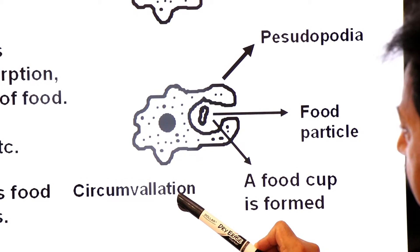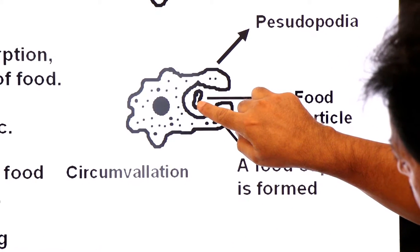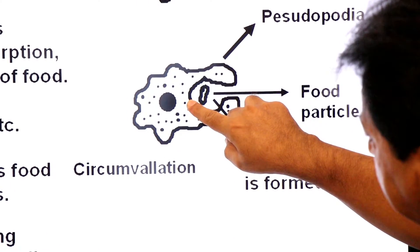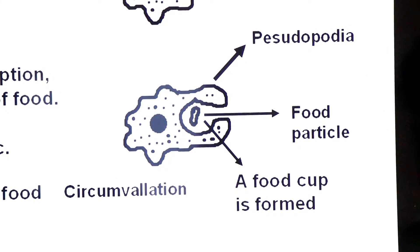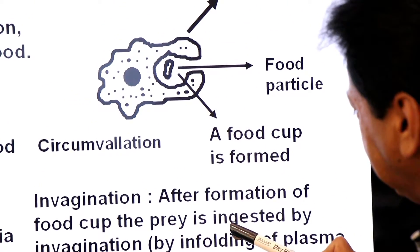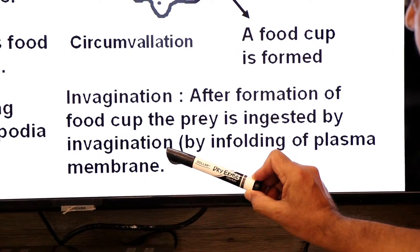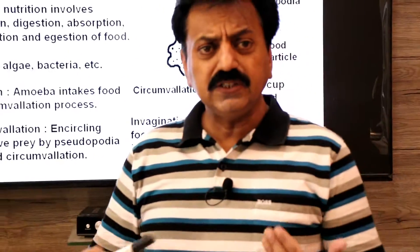Circumvallation is defined as encircling the prey by extending pseudopodia. After the formation of the food cup, the prey is ingested by a process called invagination. Invagination means in-folding of the plasma membrane. As invagination occurs, amoeba in-folds its plasma membrane and the food enters inside in the form of a vacuole, called the food vacuole.